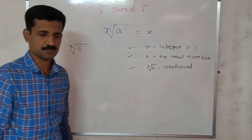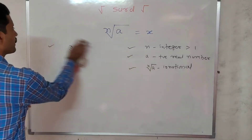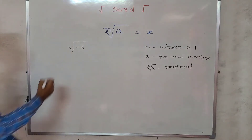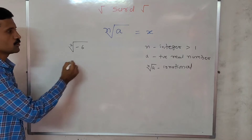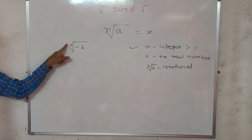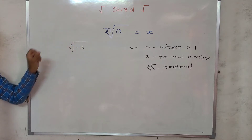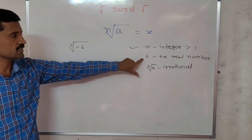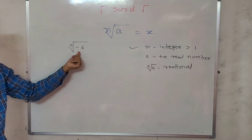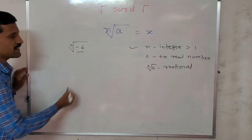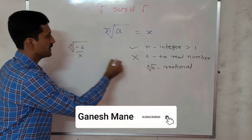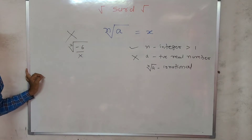Now let us have another example: square root of minus 6. Here the order is not given so it must be 2, which is an integer greater than 1 — first condition satisfied. However, the second condition requires a to be a positive real number. Here the radicand is minus 6, which is not positive. So the second condition is not satisfied, and therefore this is not a CERT.